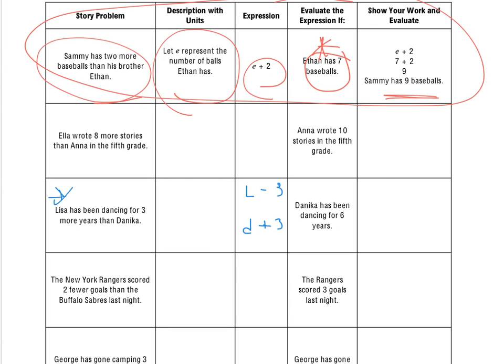So, depending on which one they give us, if they give us Danika, we're going to use this. If they give us Lisa, we're going to use this. And we can look right here to see, and it says Danika has been dancing for six years. So, I know that when they give me how long Danika has been dancing, it means I'm going to be using the one with the D because we're going to let D stand for or represent the number of years that Danika has been dancing.